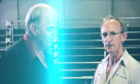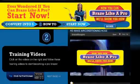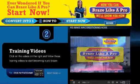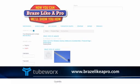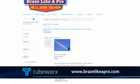Mick, tell us about this exciting new website. The new website is called brazelikeapro.com and it's designed to help people make their own AC hoses. If you go to brazelikeapro.com, you can buy all the equipment and fittings that you need to reproduce any AC hose.